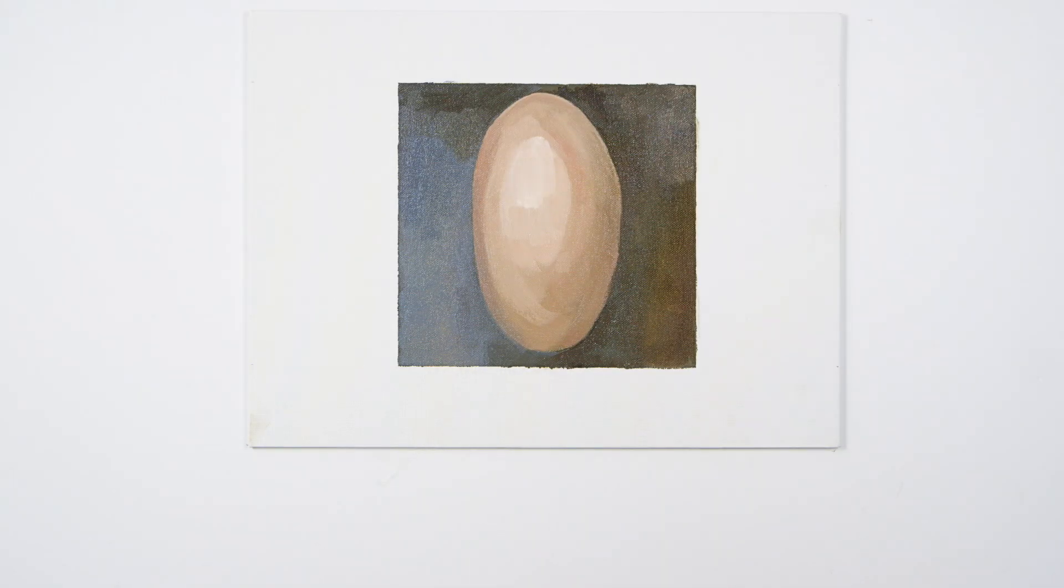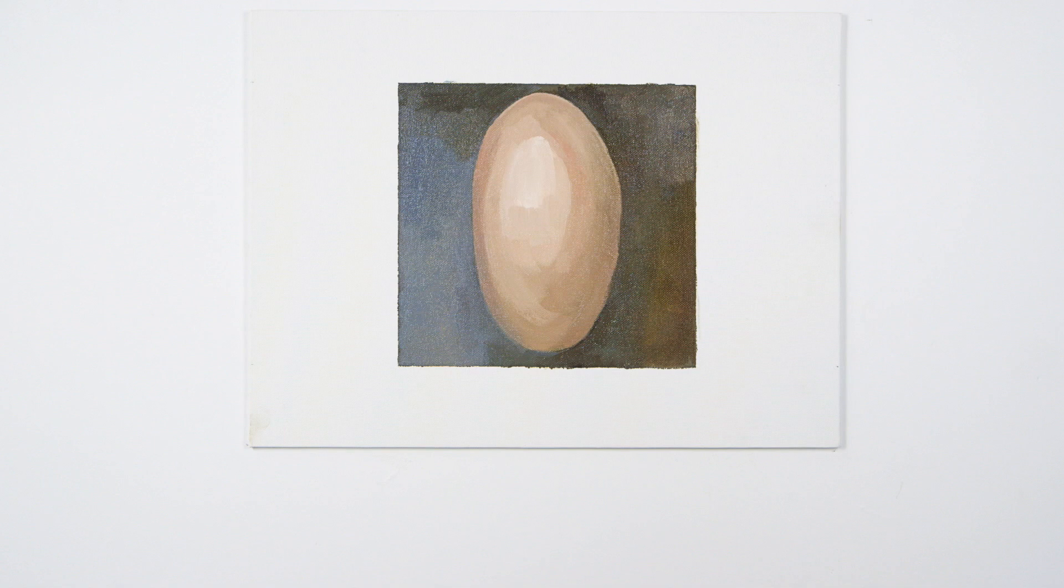Here, where the form transitions into the background, two mixtures of the same tonal value but different hue sit side by side. We could use the term lost edges to describe the effect this has.